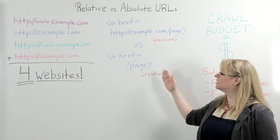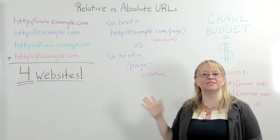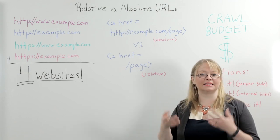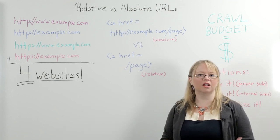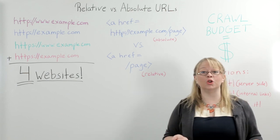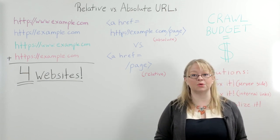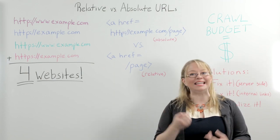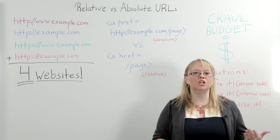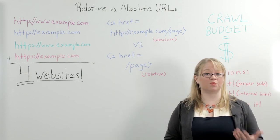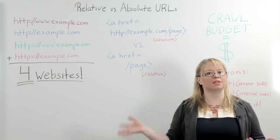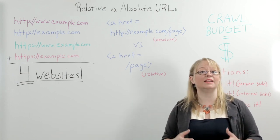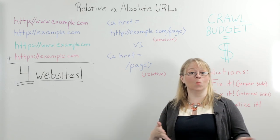Basically what a relative URL does is it relies on your browser to understand that this link is pointing to a page that's on the same domain that we're already on — it just assumes that and goes there. And there are a couple of really good reasons to code relative URLs. One is that it is much easier and faster to code, so when you are a web developer building a site with thousands of pages, coding relative versus absolute URLs is a way to be more efficient.